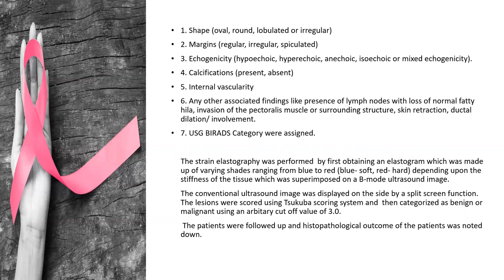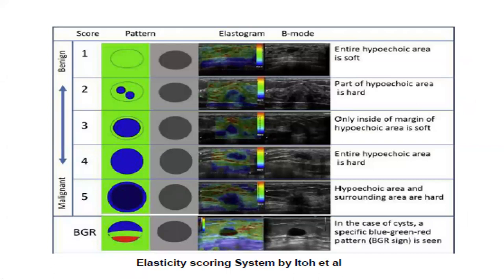Subsequently, the USG BIRADS category was assigned to each mass. Strain elastography was performed by obtaining an elastogram made up of varying shades of blue to red — blue indicating softer or benign category, and red indicating harder or stiffer, towards malignant category. A dual split screen was used with conventional B-mode on one side and the elastographic image on the other. The scoring system used was a 5-point scale: scores 1, 2, 3 were categorized as benign, and scores 4 and 5 as malignant.